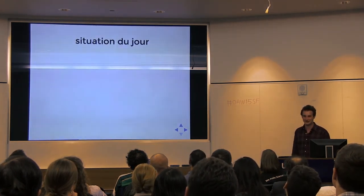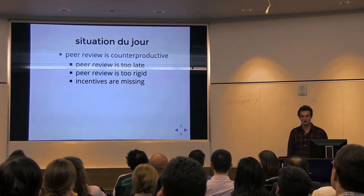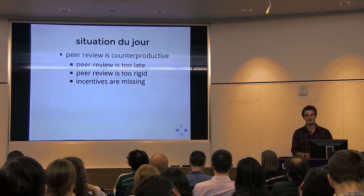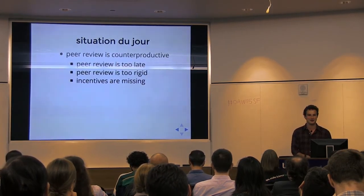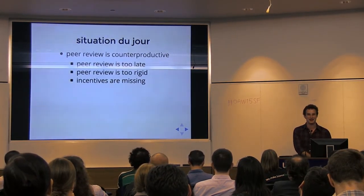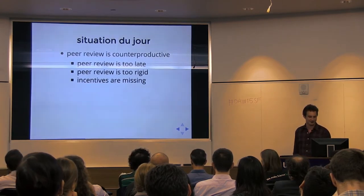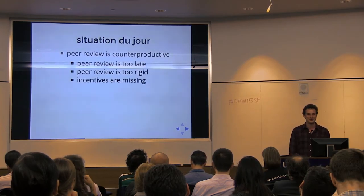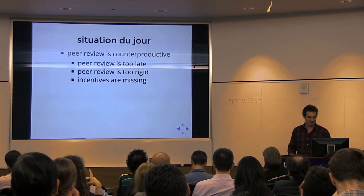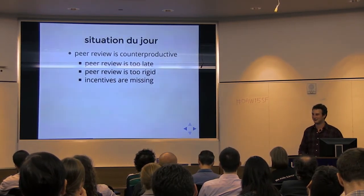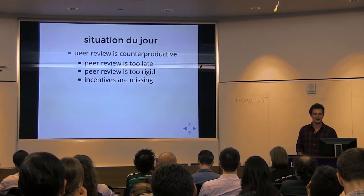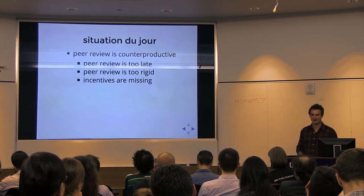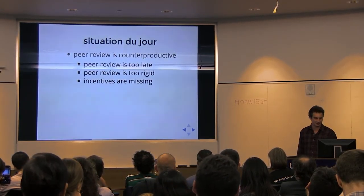So what's the problem now? First of all, peer review is often counterproductive because it happens too late — once you've already finished your project, and not when you're designing it, when the advice would actually be helpful. Second, it's too rigid. You can't communicate back and forth with reviewers, so it's not effective. And incentives are missing — reviewers don't have good incentives to do a good job because their identity is often not public and they're not getting rewarded.